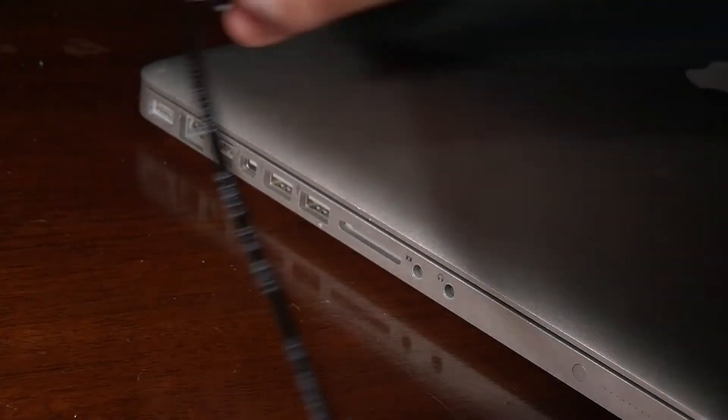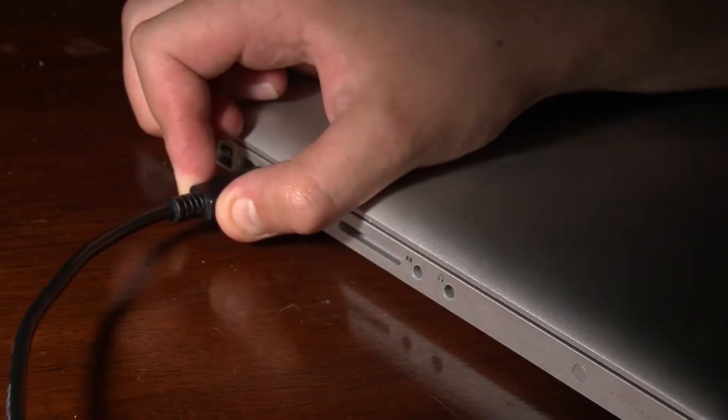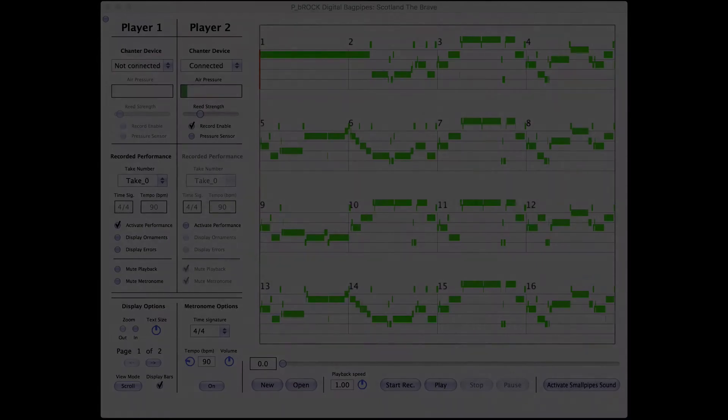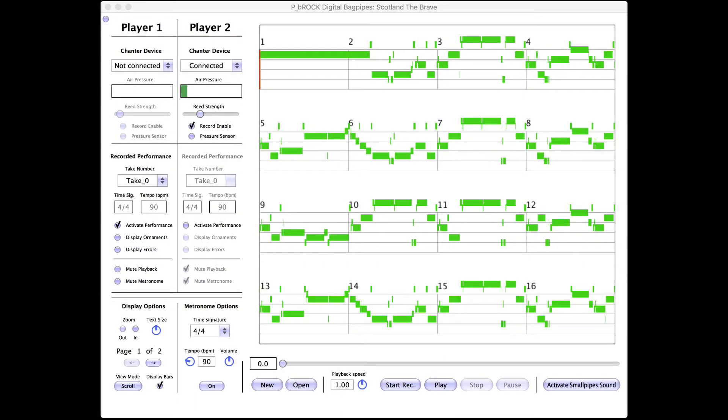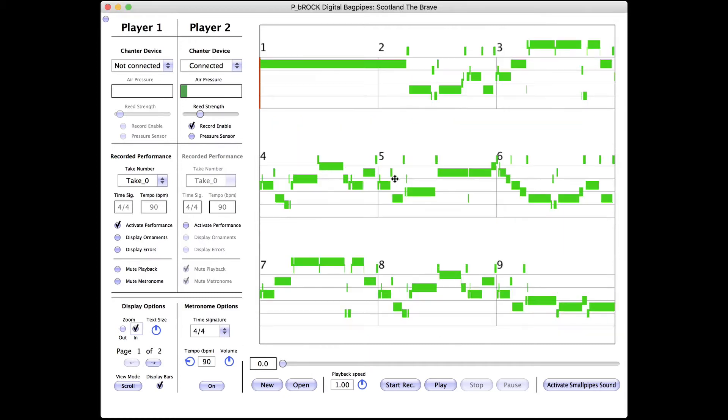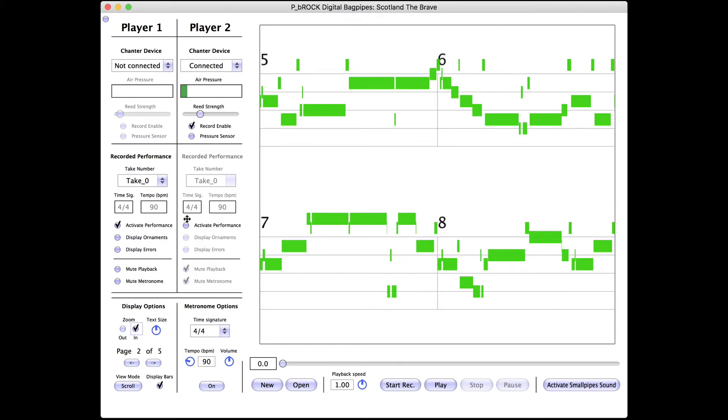When connected to a computer, the Chanter forms part of a complete digital system to help piping instructors and their students. The Peabarock software allows performances recorded using the digital Chanter to be displayed, examined, compared, and played back from any point, at any speed.